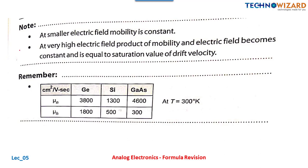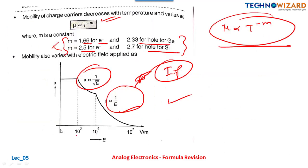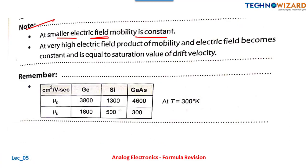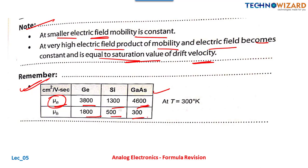Note: at small electric fields (0 to 10³), mobility is constant. At very high electric fields, the product of mobility and electric field becomes constant and equals the saturation drift velocity. Mobility values: for germanium, μn = 3800, μp = 1800; for silicon, μn = 1300, μp = 500; for gallium arsenide, μn = 4600, μp = 300 (all in cm²/V·s). This table is very very important.